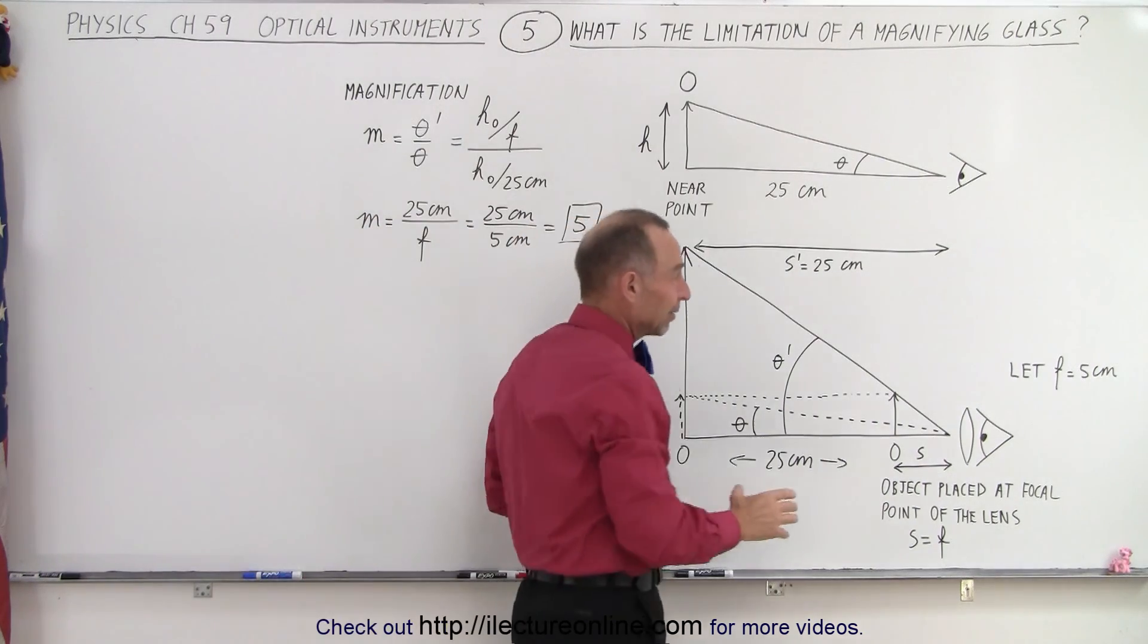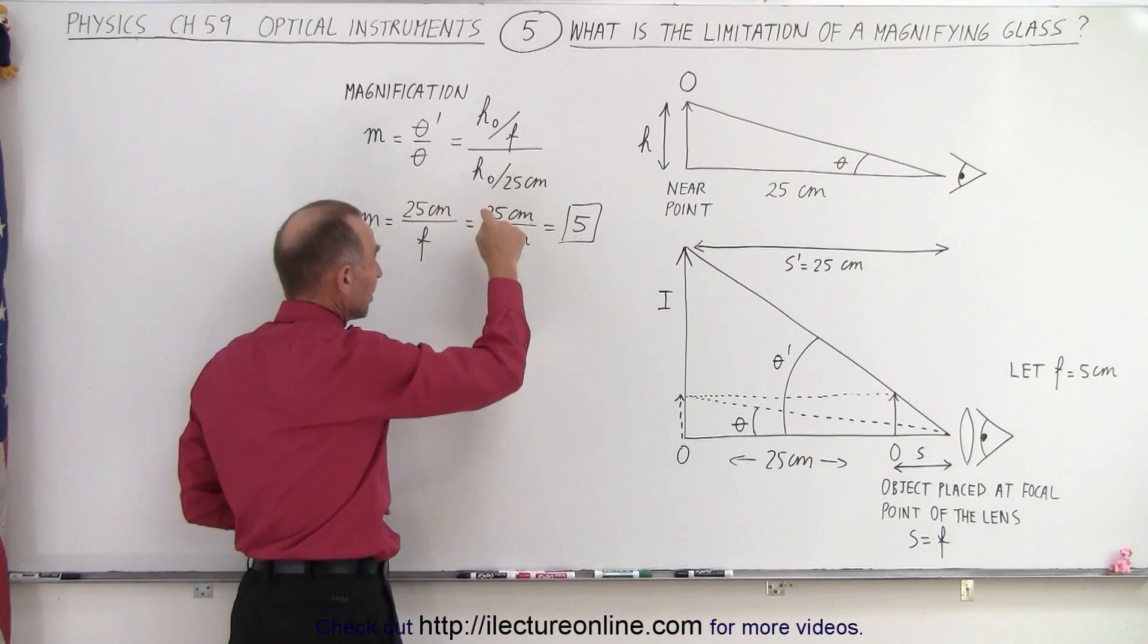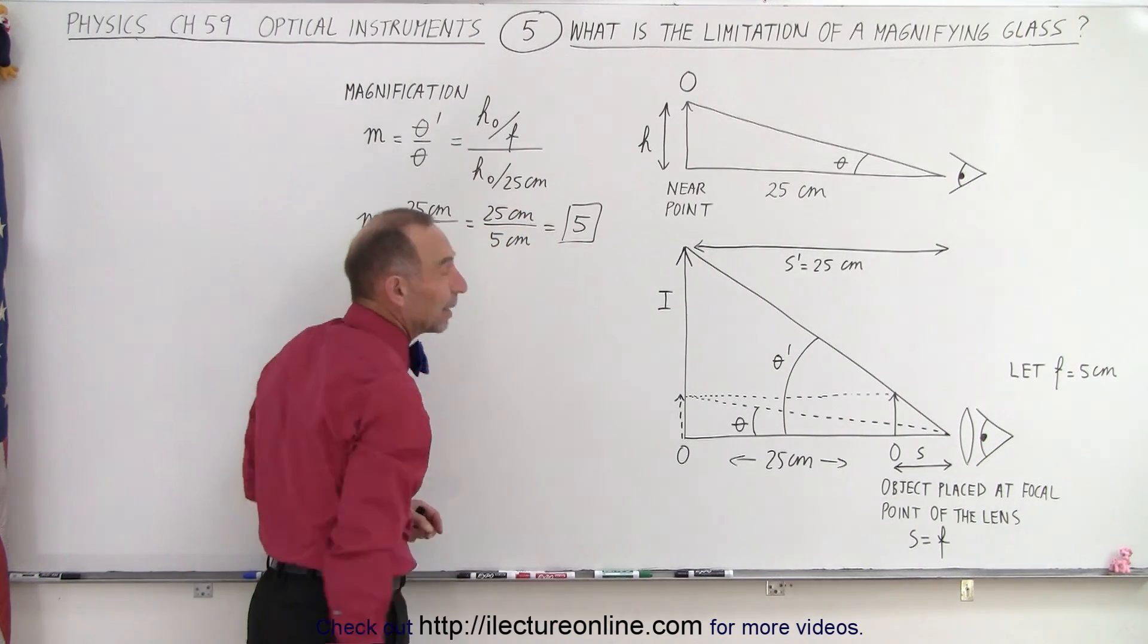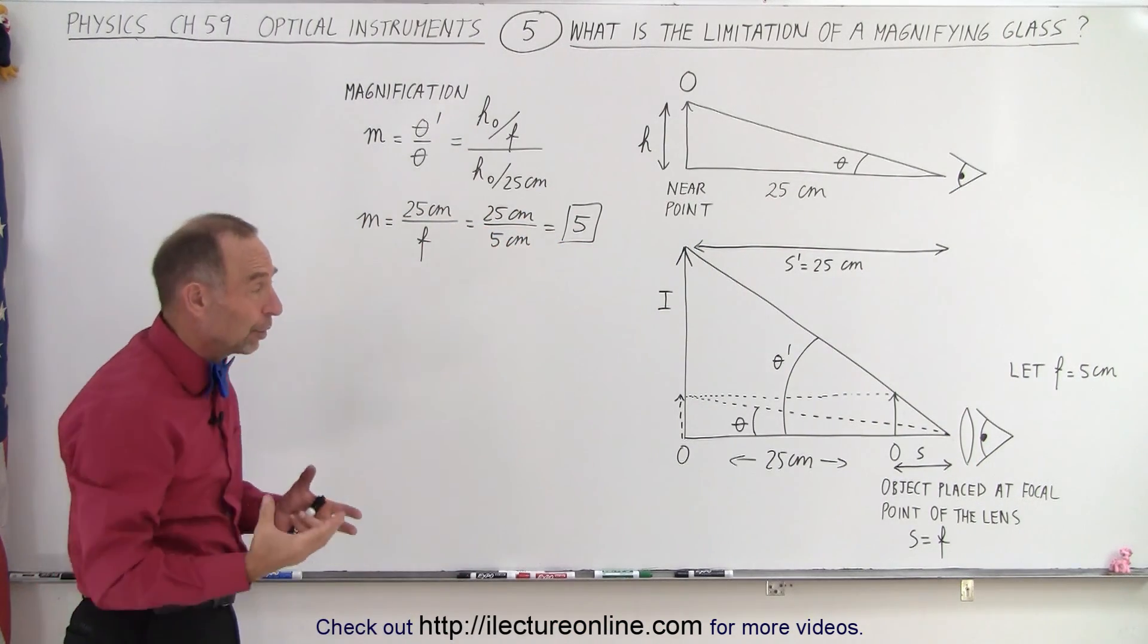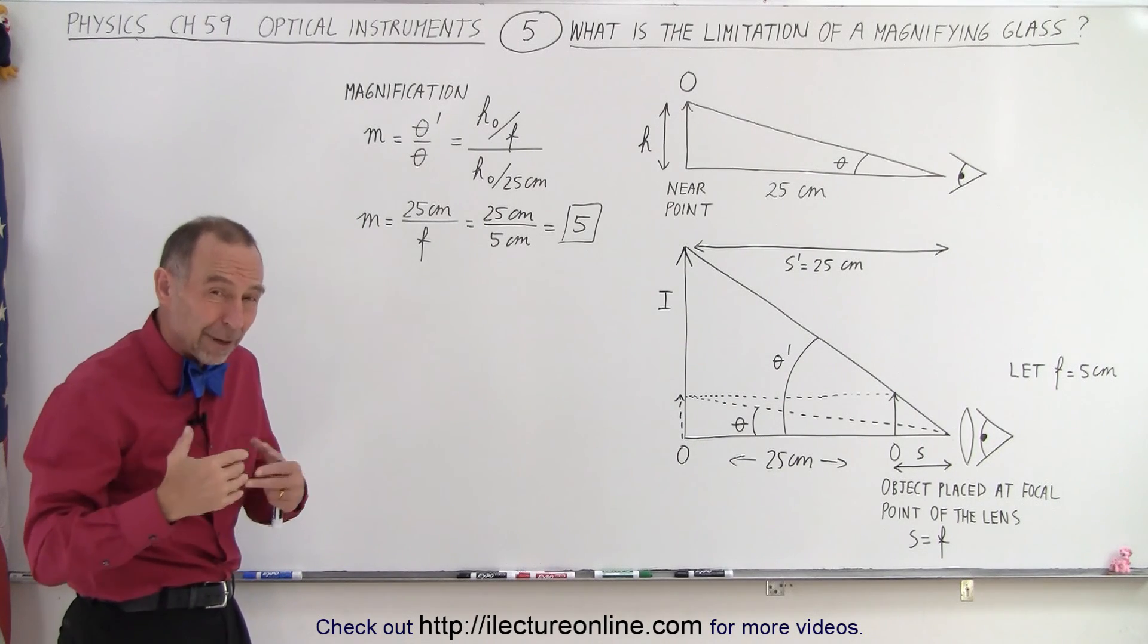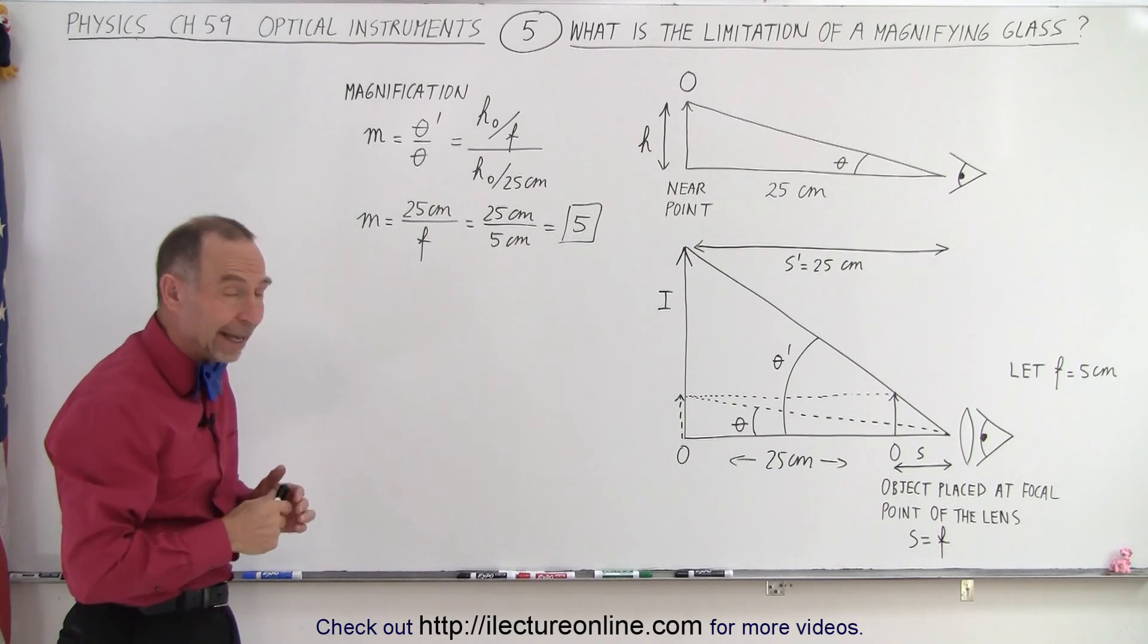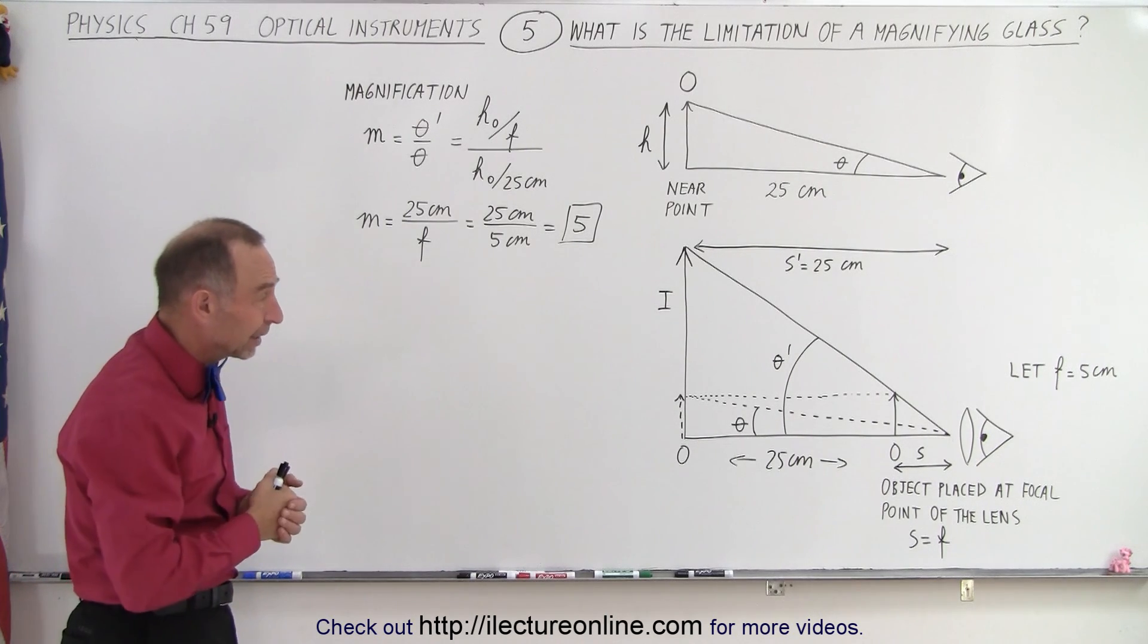And let's say, for example, that the focal length is equal to 5 centimeters. Then we divide 25 centimeters by 5 centimeters, and we get a magnification of 5. In other words, we can now see objects that are one-fifth the size, maybe down to 10 micrometers with a magnifying glass like that, and still see things relatively clearly.